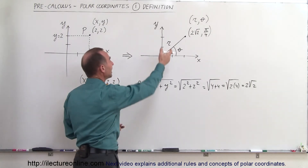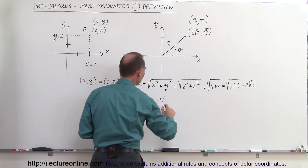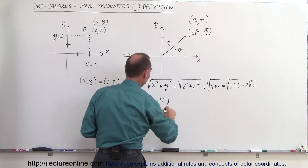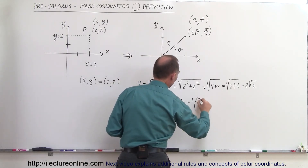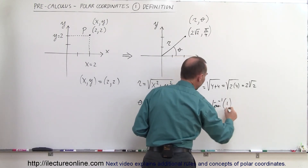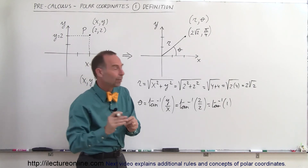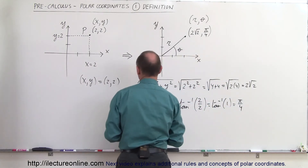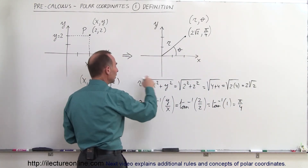Now, how do we find the angle? Theta can be found by taking the arctangent of the opposite side, which is y, divided by the adjacent side, which is x. So this would be the arctangent of 2 divided by 2, which equals the arctangent of 1. The arctangent of 1 is 45 degrees, and in radians 45 degrees is pi over 4. And that's how we convert from Cartesian coordinates to polar coordinates using these relationships.